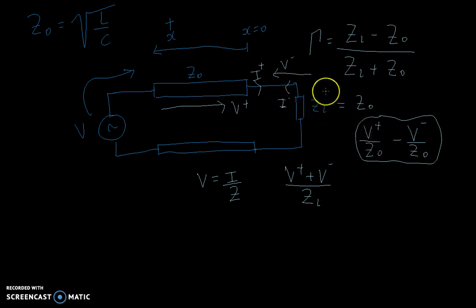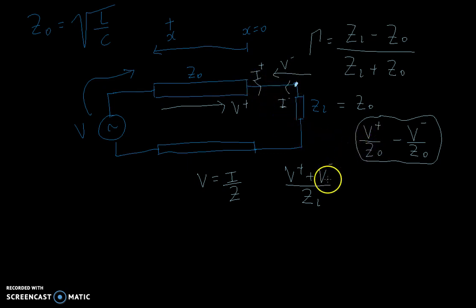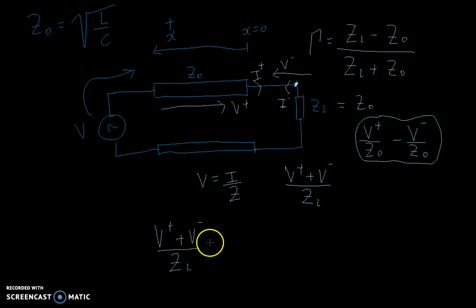Remember that the voltages V plus and V minus will add at this node here. However, the currents will subtract because one current is going in the forward direction and the other is going in the reverse direction. So these two formulas are exactly the same, so we can equate them. We write: V plus plus V minus divided by ZL is equal to V plus minus V minus divided by Z0.